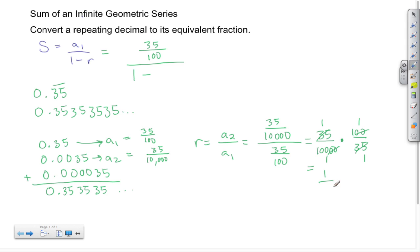...and when I multiply my denominator, I end up with 1 times 100. So I see that r is 1 over 100.